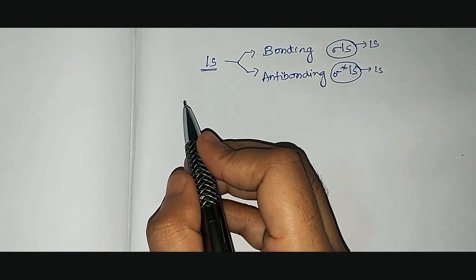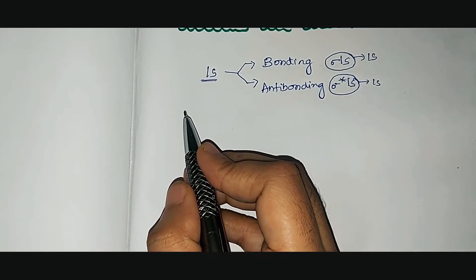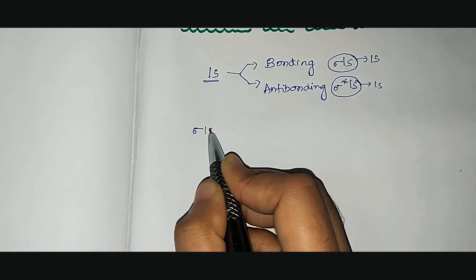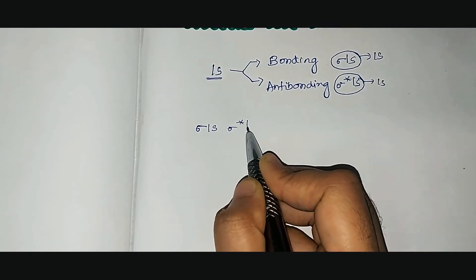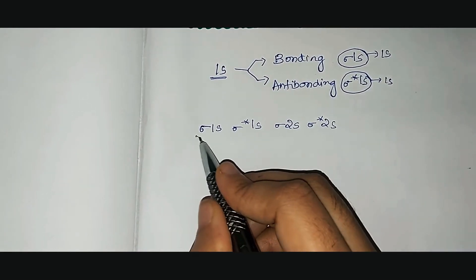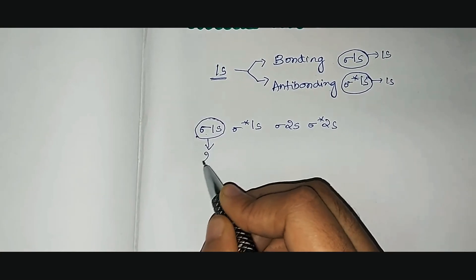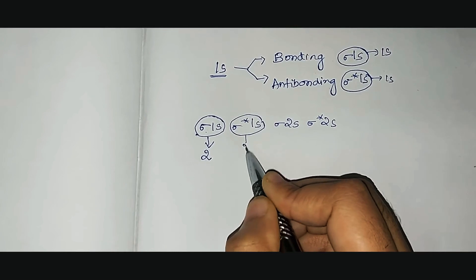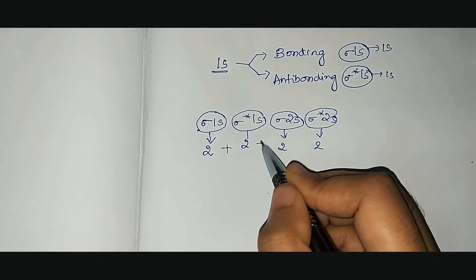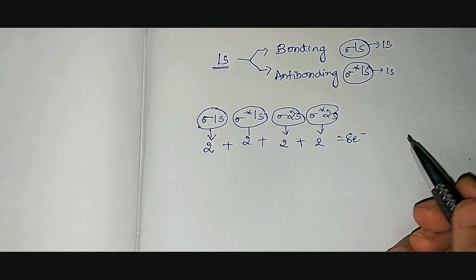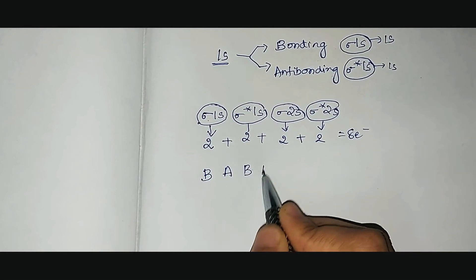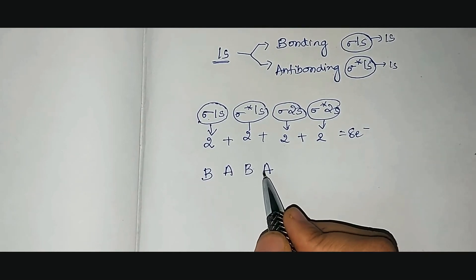To find the bond order in molecules with electrons less than 8, you need to know the orbital order. The first is sigma 1s, followed by sigma star 1s, then sigma 2s, followed by sigma star 2s. Each orbital can accommodate only 2 electrons, so these 4 orbitals can accommodate a total of 8 electrons. Since bonding orbital is followed by antibonding, and again bonding followed by antibonding, you can easily find the bond order.